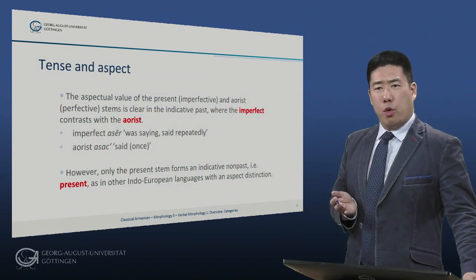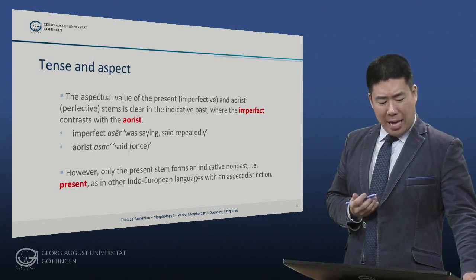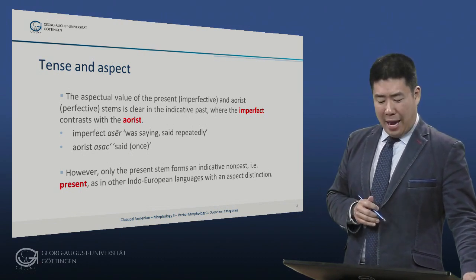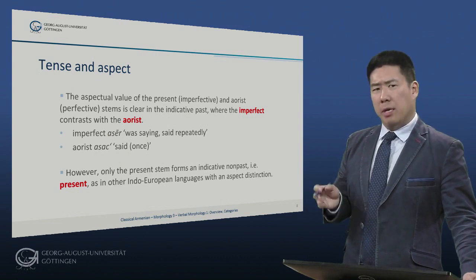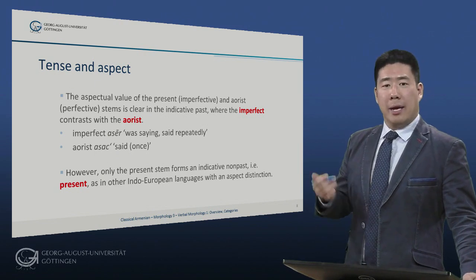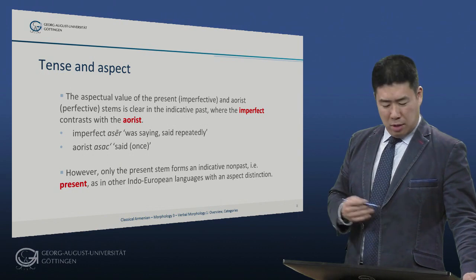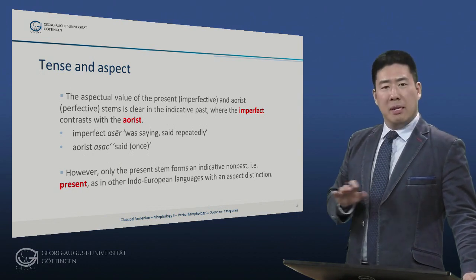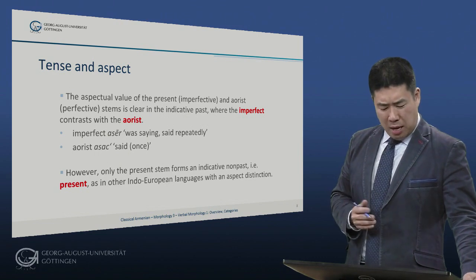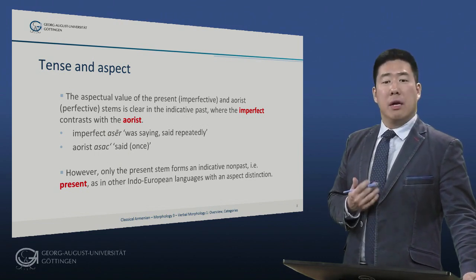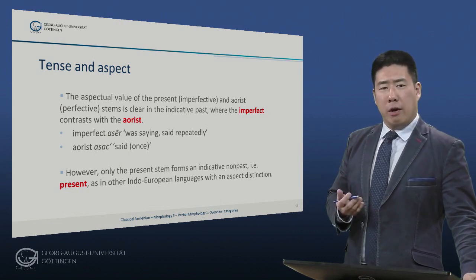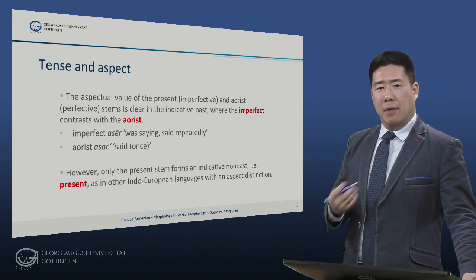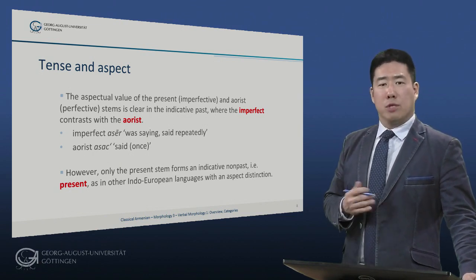Let's now look at the interaction of tense and aspect. The aspectual value of these two stems — present or imperfective and aorist or perfective — is clear in the indicative past, where the imperfect contrasts clearly with the aorist. Imperfect aser means was saying, said repeatedly, said over a period of time, kept saying. Aorist asats, in contrast, means said once. However, only the present stem forms an indicative non-past, that is the present itself; the aorist stem does not — it forms only a past.